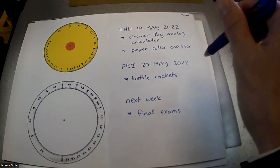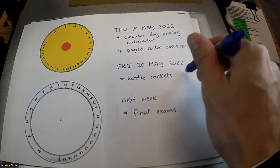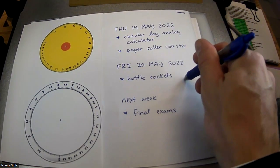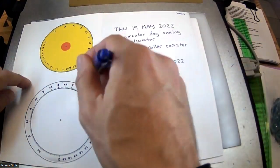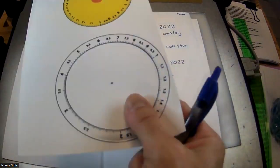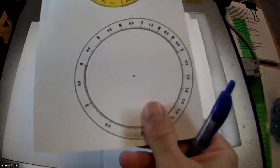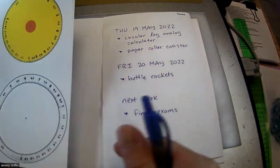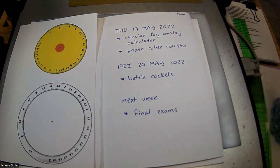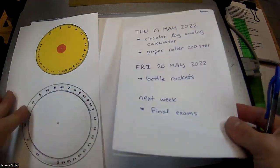Another thing we never quite got around to is a black rock bottle rocket, so that's my plan tomorrow — to have an outside day. So let's do this activity. I'll show you guys how you can multiply and divide and find square roots with just this, and then you have the rest of class to work on your paper roller coasters or study for makeup, anything you need.